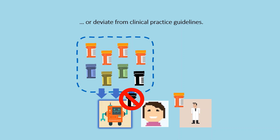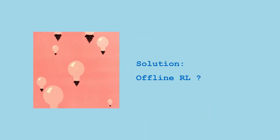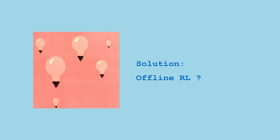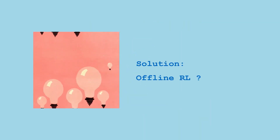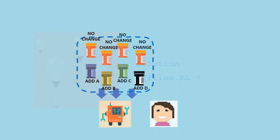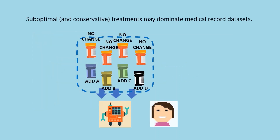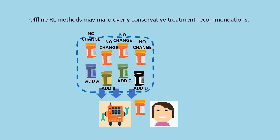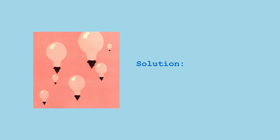We could apply offline RL, which is designed to learn from retrospective data, but medical record data may be dominated by suboptimal and often conservative treatments. As a result, offline RL methods could make overly conservative recommendations.